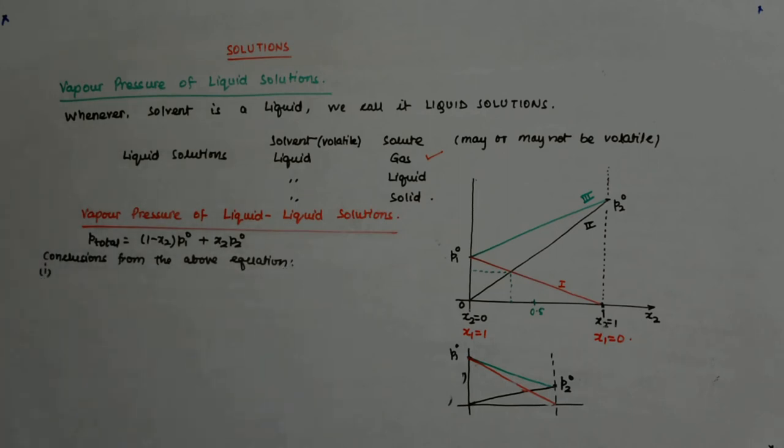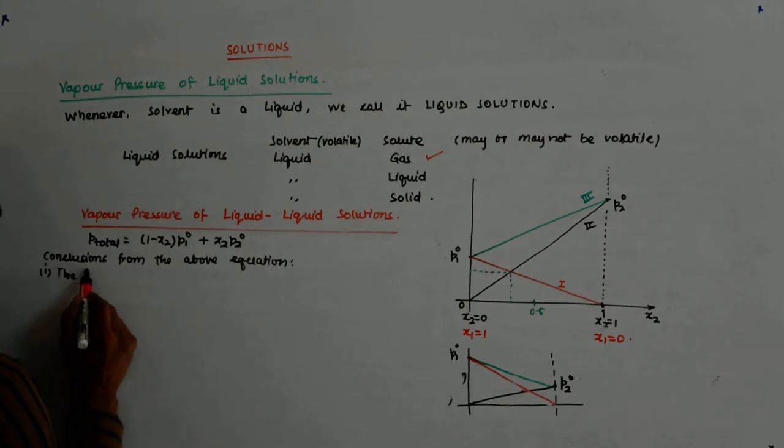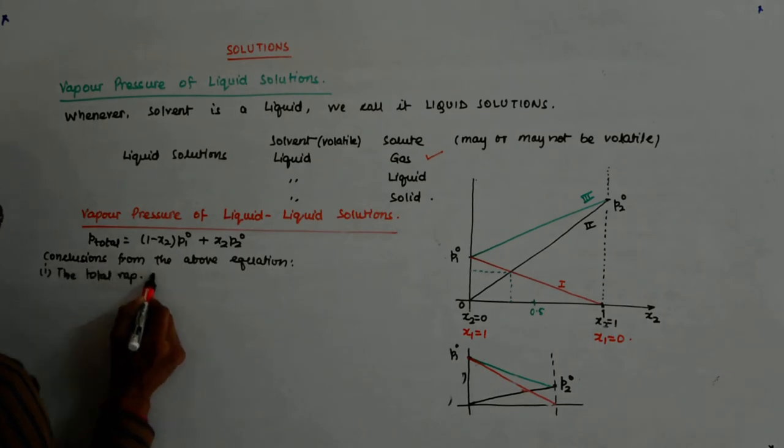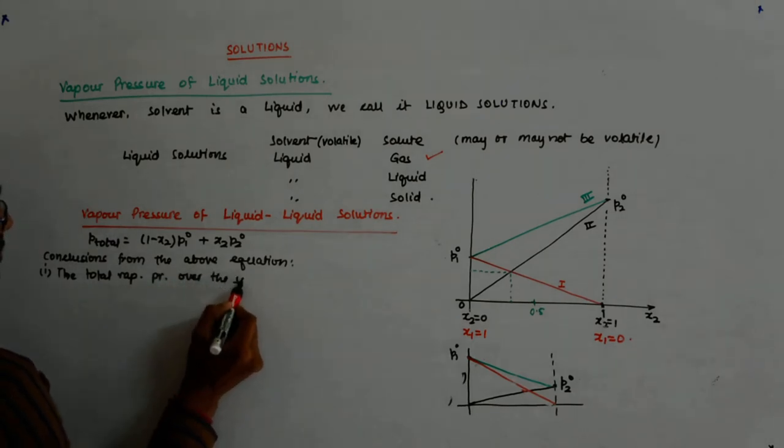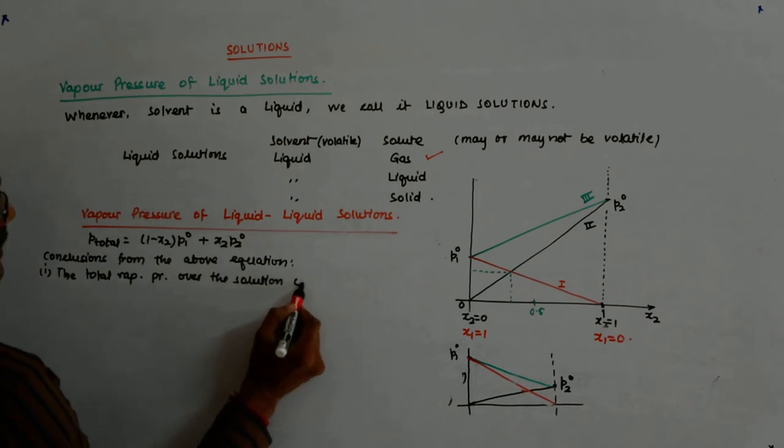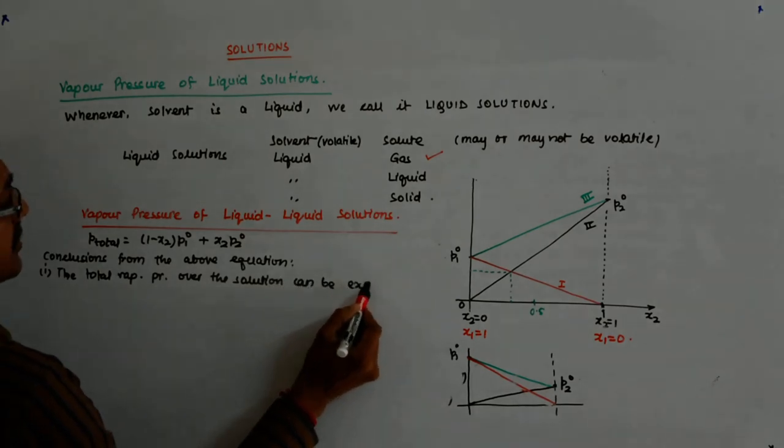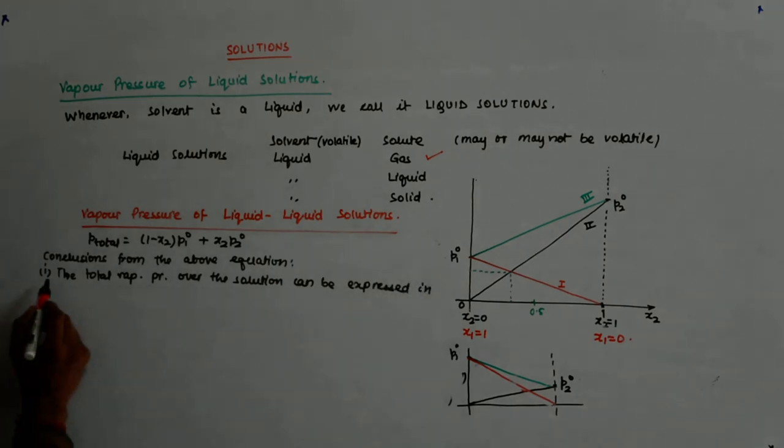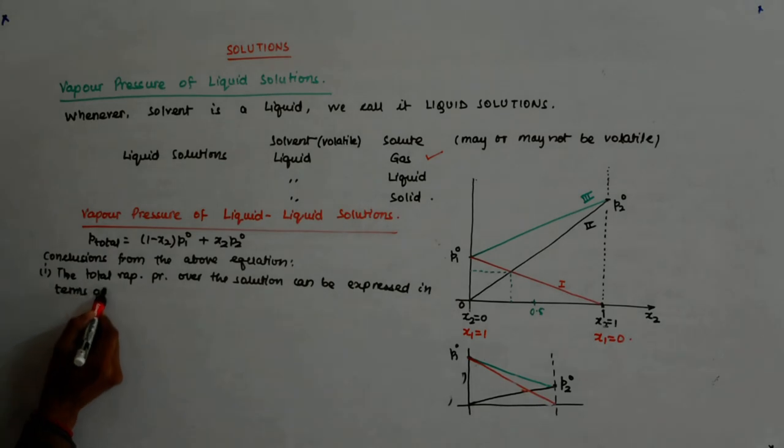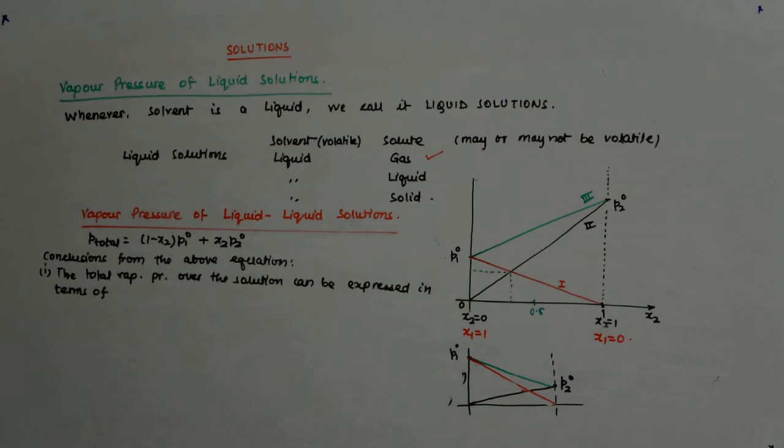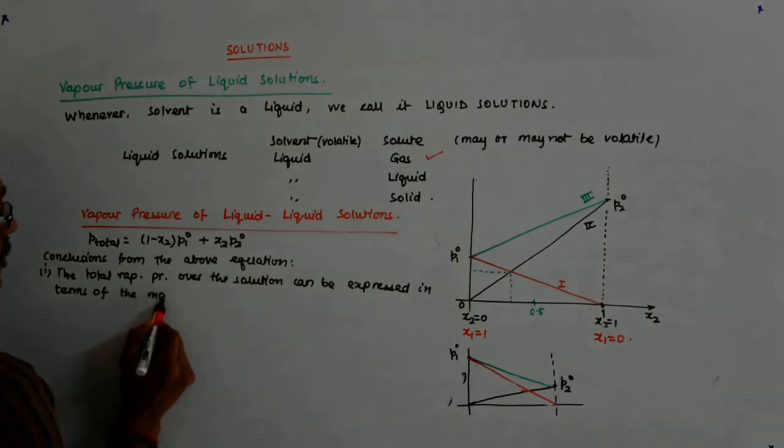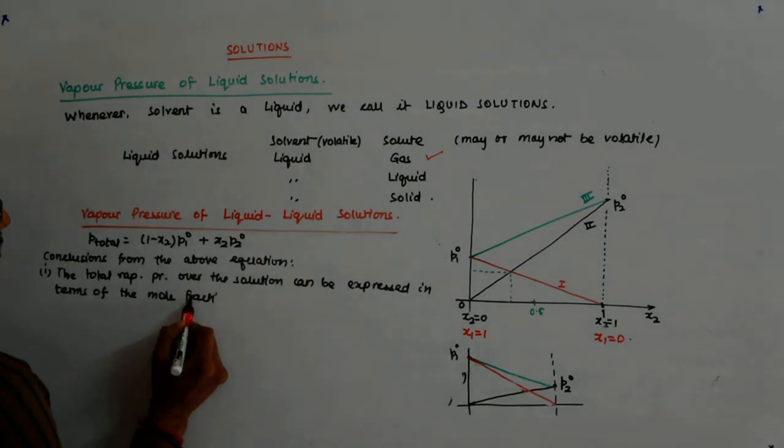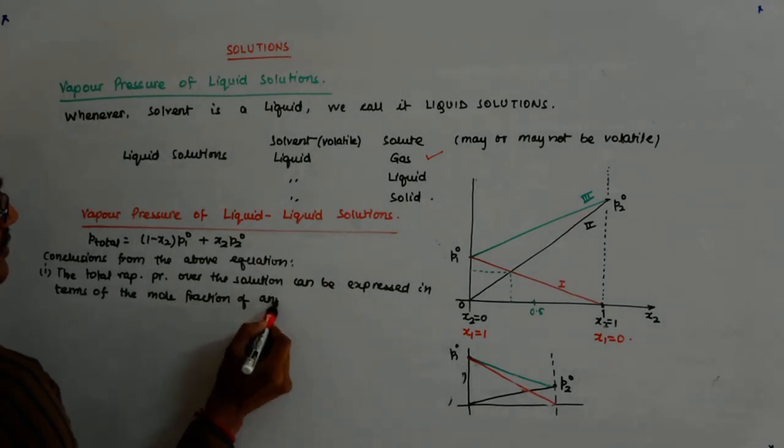Conclusions from the above equation. Number 1. The total vapor pressure over the solution can be related to the mole fraction of any one component. That is true. The total vapor pressure over the solution can be expressed in terms of the mole fraction of any component. Do you agree with that?